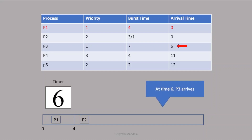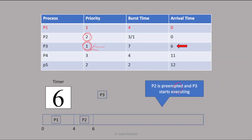P3 will be added to the ready queue. Whenever a new process arrives, we need to check the presently executing process's priority — P2's priority is 2 — and compare with the new process P3's priority. P3 is having the highest priority because the smaller the value the larger the priority. So P3 will be given a chance and P2 will be forcibly preempted and added to the ready queue. P3 has been sent to the Gantt chart.